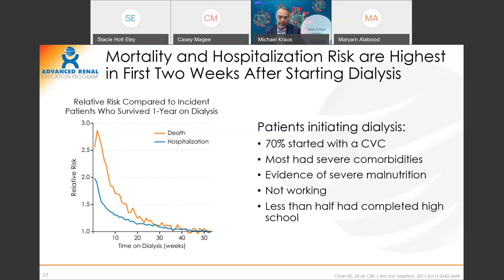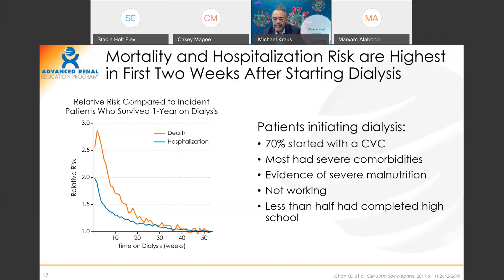When I think of transitional care — when we designed it — the goal is not to send people home. I know that surprises some of you, but the goal is first and foremost to reduce death and hospitalizations, to get more fistulas and get patients to preemptive transplant, and to educate those patients. If we do all of those things, we'll get the patients home. I'm not too worried about that, but I've got to reduce hospitalizations to improve value — and obviously mortality is huge.